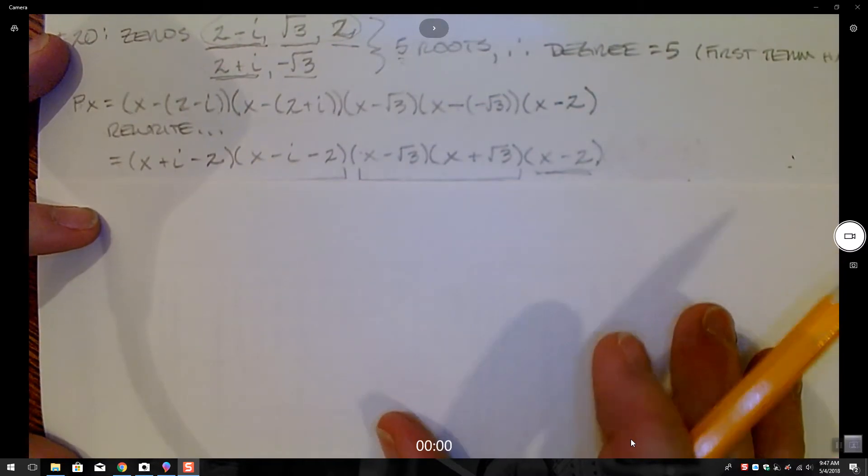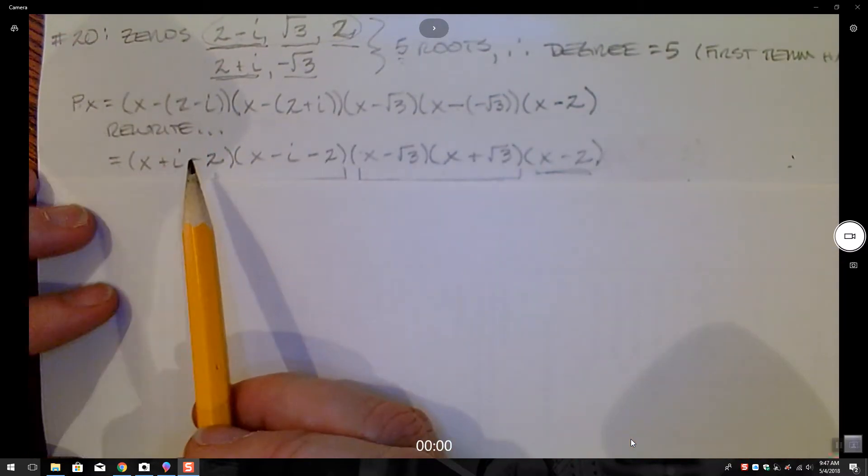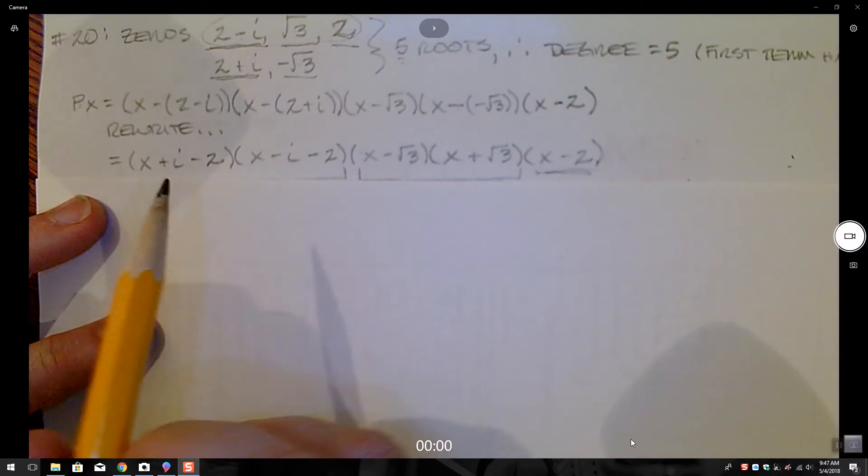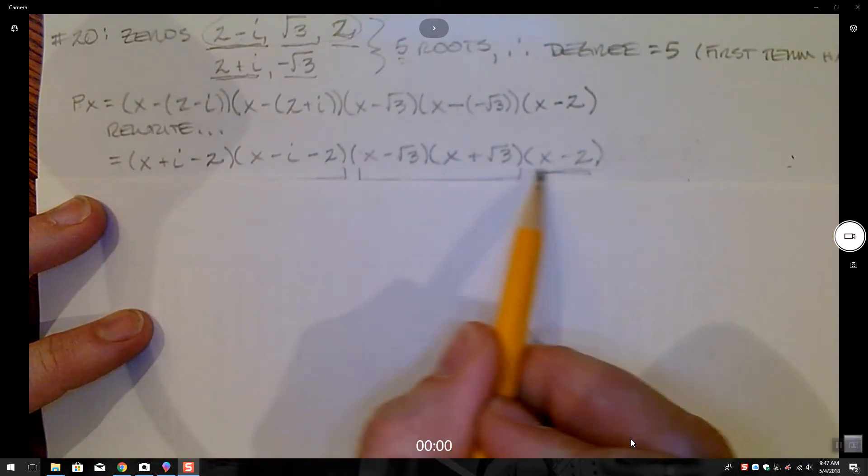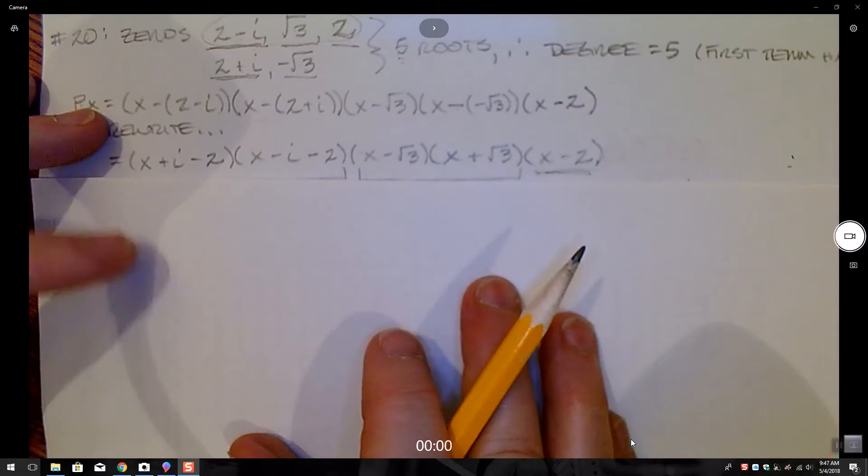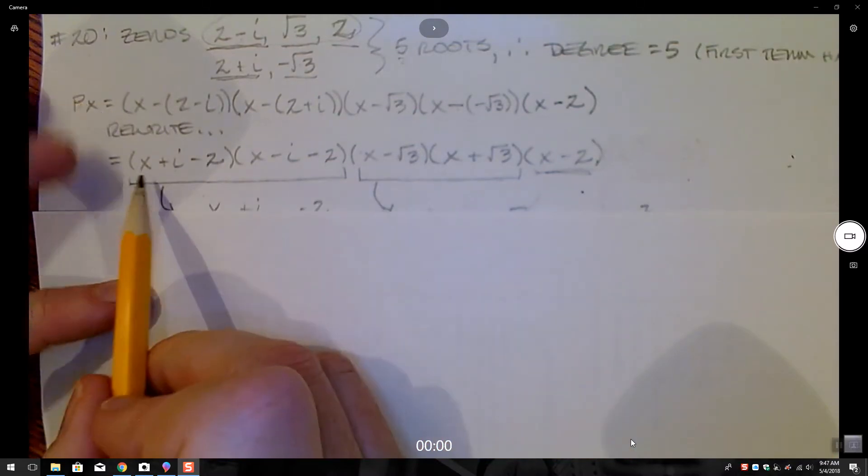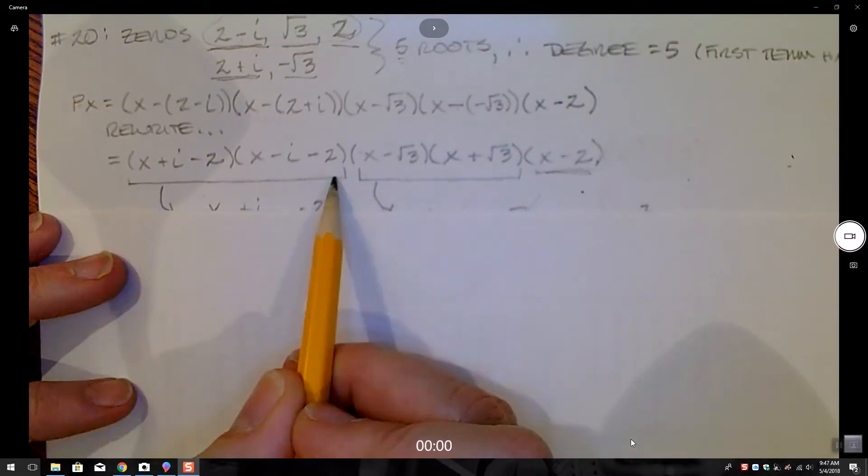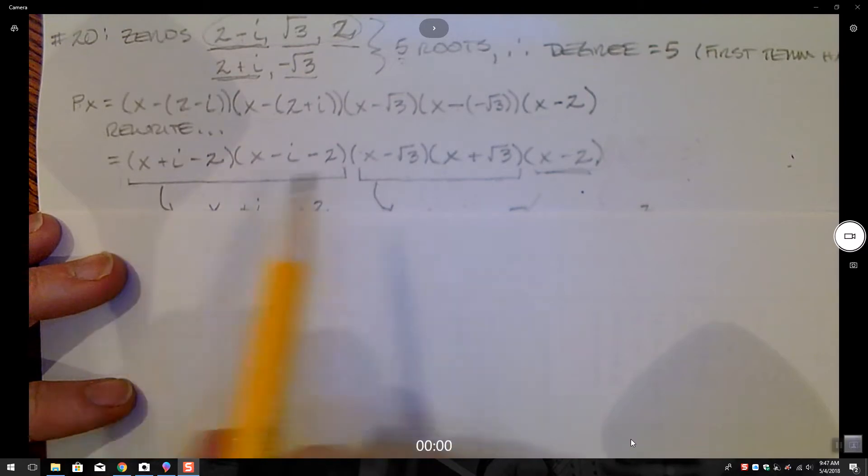Wolfram Alpha taught me that I can simplify this further, get rid of the parentheticals. So I have rewritten it this way, getting rid of my spare parentheticals, and now I just need to multiply these two factors together to turn that into a single factor.